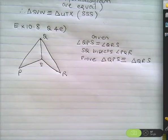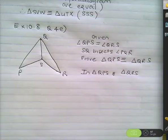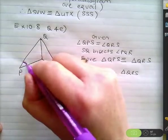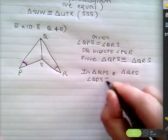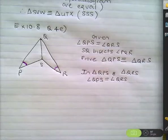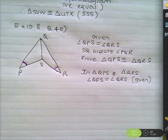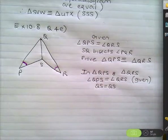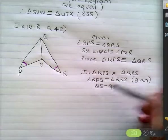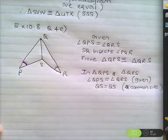Try and use what's given. We start off by saying: in triangle QPS and triangle QRS. Let's mark in what was given — in those triangles, angle QPS equals angle QRS. Given. QS is a common side, so QS equals QS. Some people want to see something on both sides of the equals, so you can write QS equals QS, or just write 'common side' — either is fine.